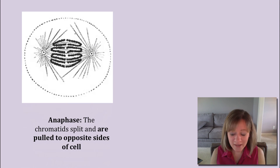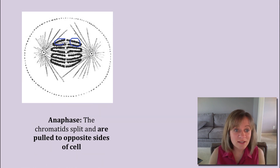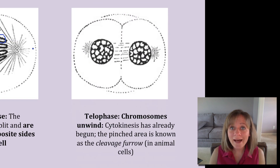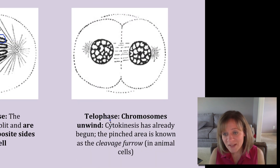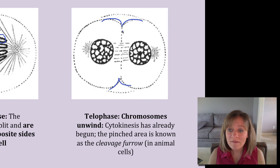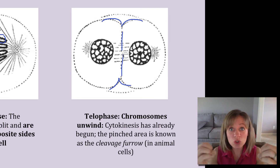Next is anaphase: the sister chromatids are pulled apart. Each chromatid here is identical to its pair — that's why when you have offspring during mitosis, the new cell is identical, or a clone, of the original cell. These chromatids are pulled to opposite sides of the cell. The last phase of mitosis is telophase: the chromosomes are unwinding back into chromatin, and cytokinesis has already begun. The pinched region in animal cells is called a cleavage furrow, which pinches in all the way until it creates two whole new cells.